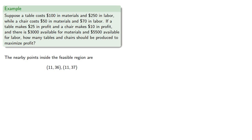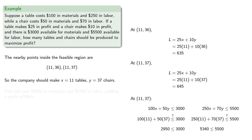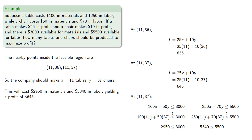Now we can check the value of our objective function. The company should make 11 tables and 37 chairs, which will cost $2,950 in materials and $5,340 in labor, yielding a profit of $645.